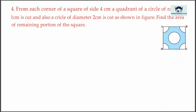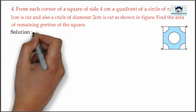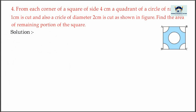See the figure carefully. Here, side is given as 4 centimeter. The quadrant radius is 1 centimeter, and also the diameter of the center circle is 2 centimeter, that is, radius is 1 centimeter.